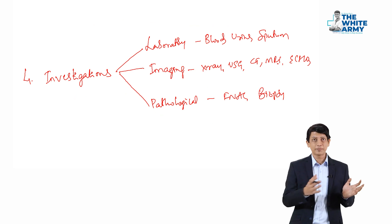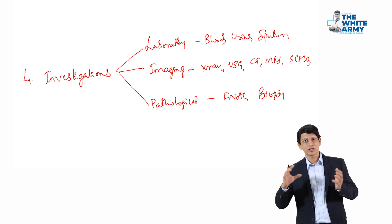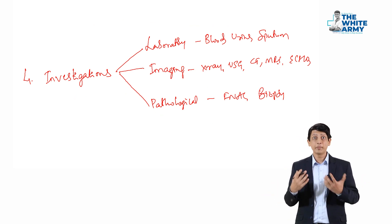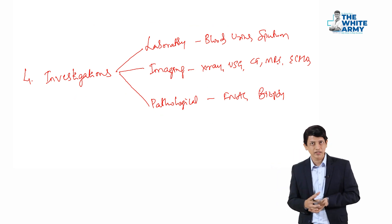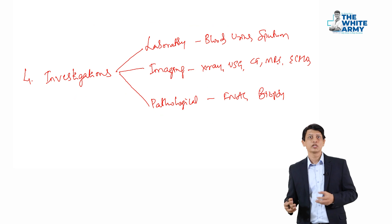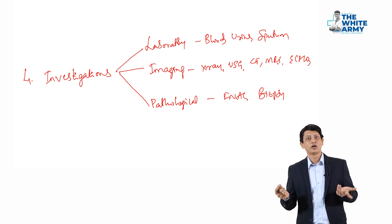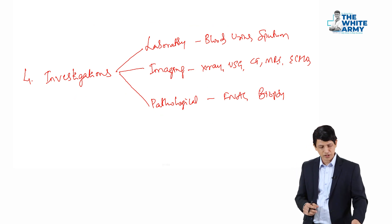Investigations. For example, for thyroid malignancies, what are the laboratory investigations you get done? Like a thyroid function test and other complete hemogram, all those things. Imaging, you want to get an ultrasound done. You may get an x-ray of the neck done or sometimes you may have to get a CT scan done. Pathology, you may get a FNAC or maybe some core needle biopsy to confirm the malignancy. These are the investigations.